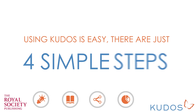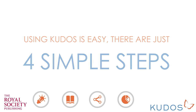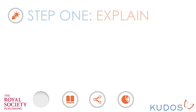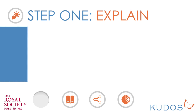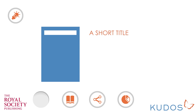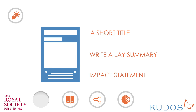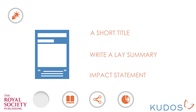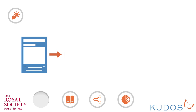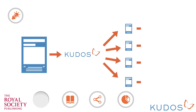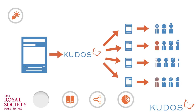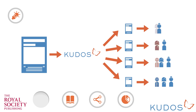With QDOS you can explain, enrich, and share links to your publications, then sit back and watch your readership grow. Using QDOS is easy — there are just four simple steps. Step 1: Explain. Give your publication a short title, write a lay summary and an impact statement. QDOS then distributes this all over the web, linking back to your publication to help more people find and understand your work.